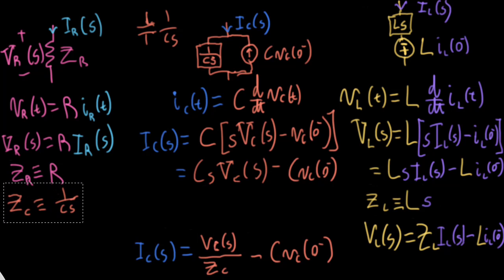Just as with the capacitor, if you have a purely capacitive impedance, you will often just write a capacitor symbol instead of this generic impedance block. Similarly, for a purely inductive impedance, you will write an inductor symbol and write LS next to it. It's a matter of personal preference what schematic notation you use for impedances, and once you get to more complicated impedances, you just wind up writing blocks anyway.